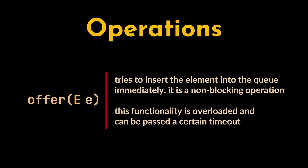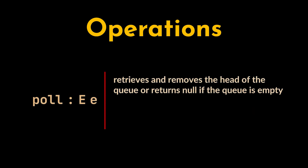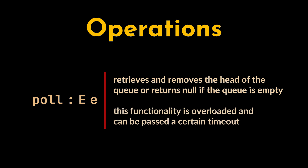The offer functionality is overloaded and can be passed a timeout — it will wait for that specified time only for space to become available. Similarly, the poll operation is another non-blocking operation that retrieves and removes the head of the queue, or returns null if the queue is empty. Poll is also overloaded and can be passed a timeout, waiting for an element to become available.